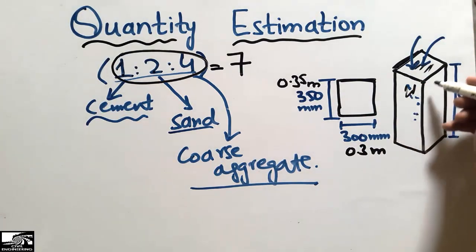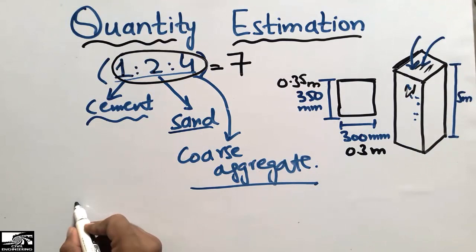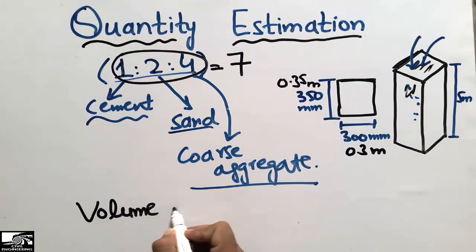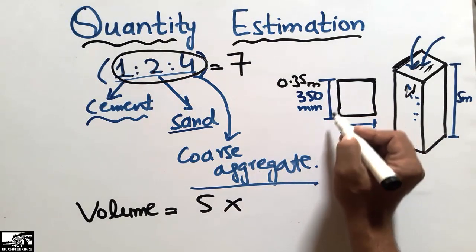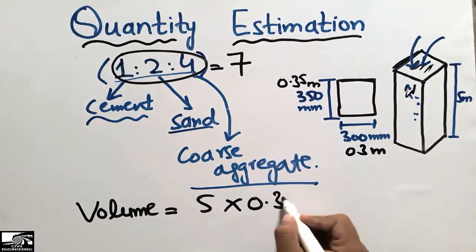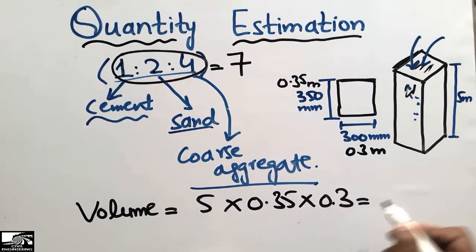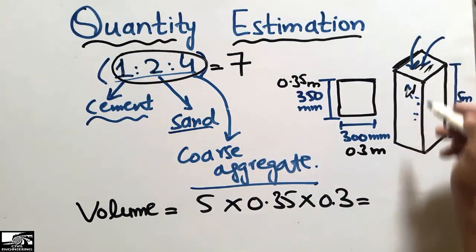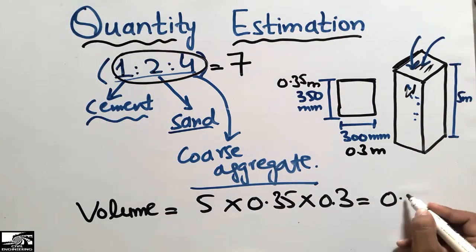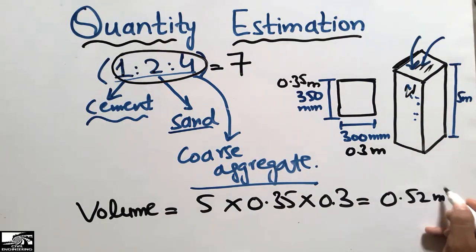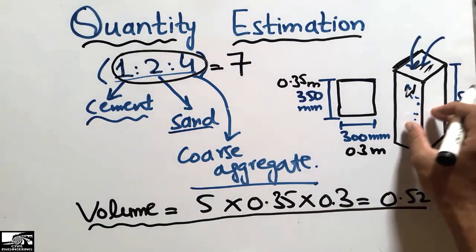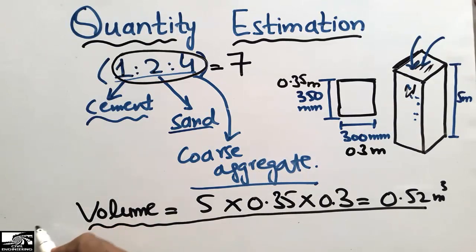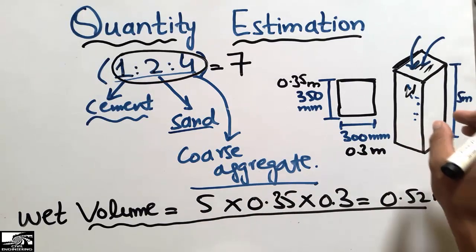First, I will find the volume of this column. The volume is found by multiplying the three dimensions: the length of 5 meters with the two cross-section dimensions, 0.35 and 0.3 meters. We get the total wet volume of the column, which comes out to be 0.52 cubic meters.